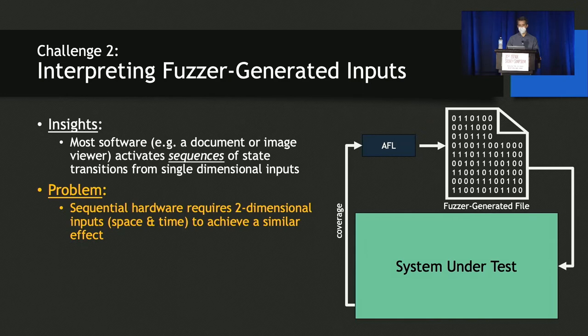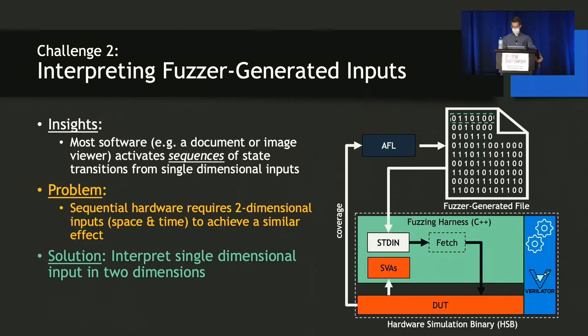The second challenge is that most software applications, for example, a document or image viewer, activate entire sequences of state transitions from a single-dimensional input such as a PDF or a JPEG. As a result, most software fuzzers generate a single input file or vector of bytes to feed the system under test. Alternatively, sequential hardware requires several single-dimensional input vectors, or two-dimensional inputs spread over space and time, to achieve a similar effect. We address this issue by designing a hardware fuzzing harness or test bench that interprets fuzzer-generated input files in two dimensions, reading fixed-sized chunks of data and feeding them to the DUT one by one as individual test cases spread over time.